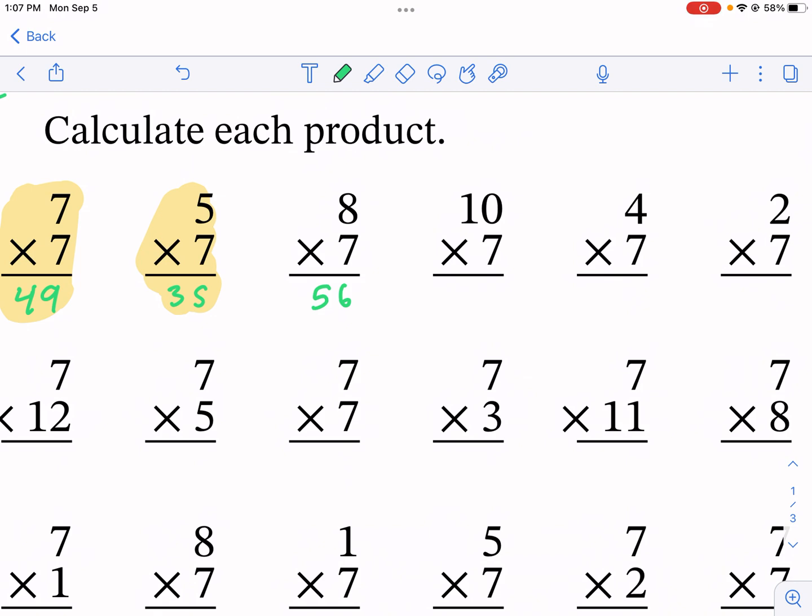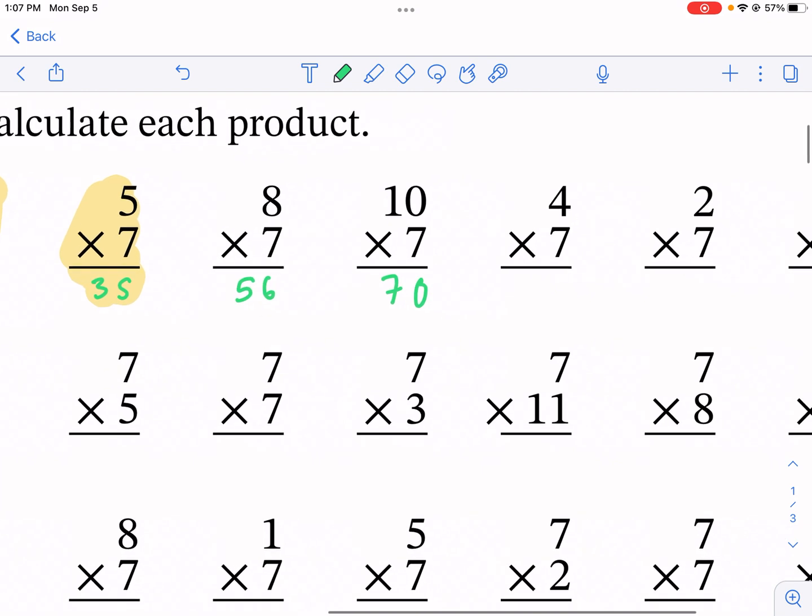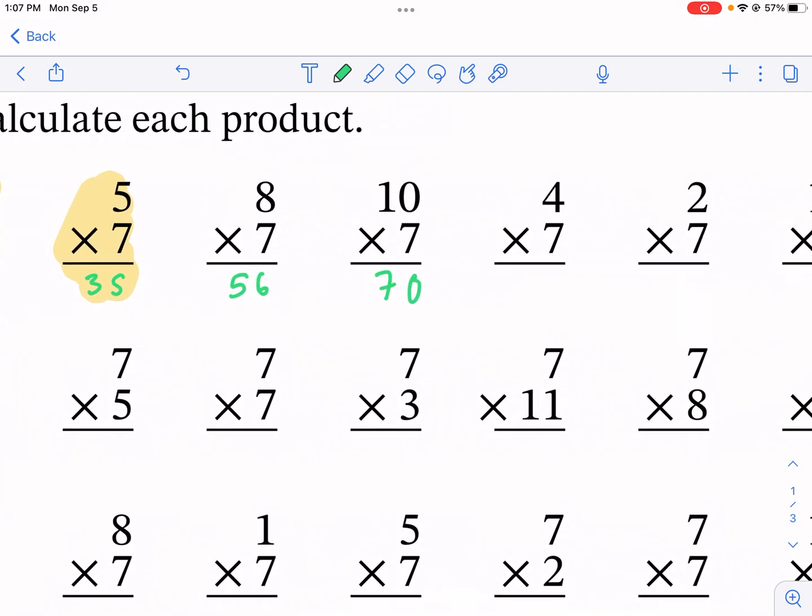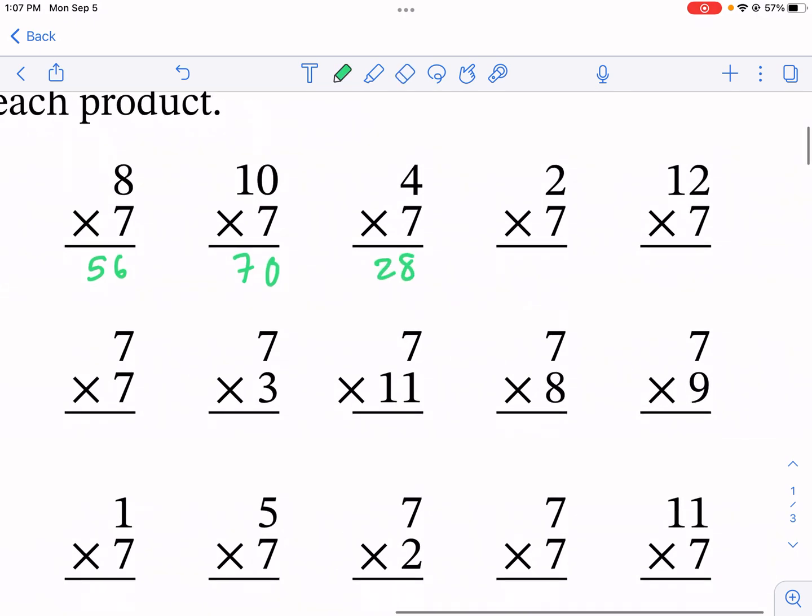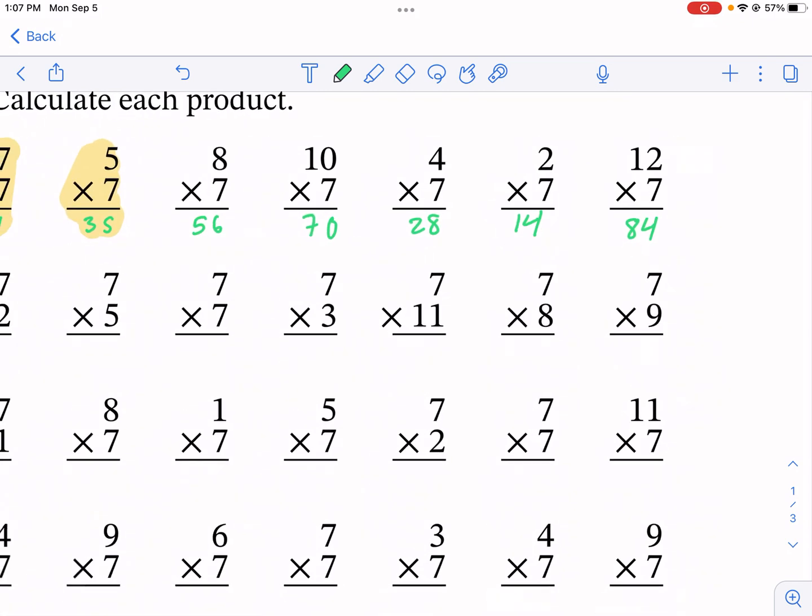10 times 7, you can use a standard algorithm. So 7 times 0 first, 7 times 1 second, we get 70. But just essentially multiply 7 times 1 and add the 0 on the end to make it 70. That's the trick with 10s. 7 times 4, this is 28. Then we have 7 times 2. Definitely need to know this. That's 14. And then 12 times 7, that is 84. That's one of the trickier ones.